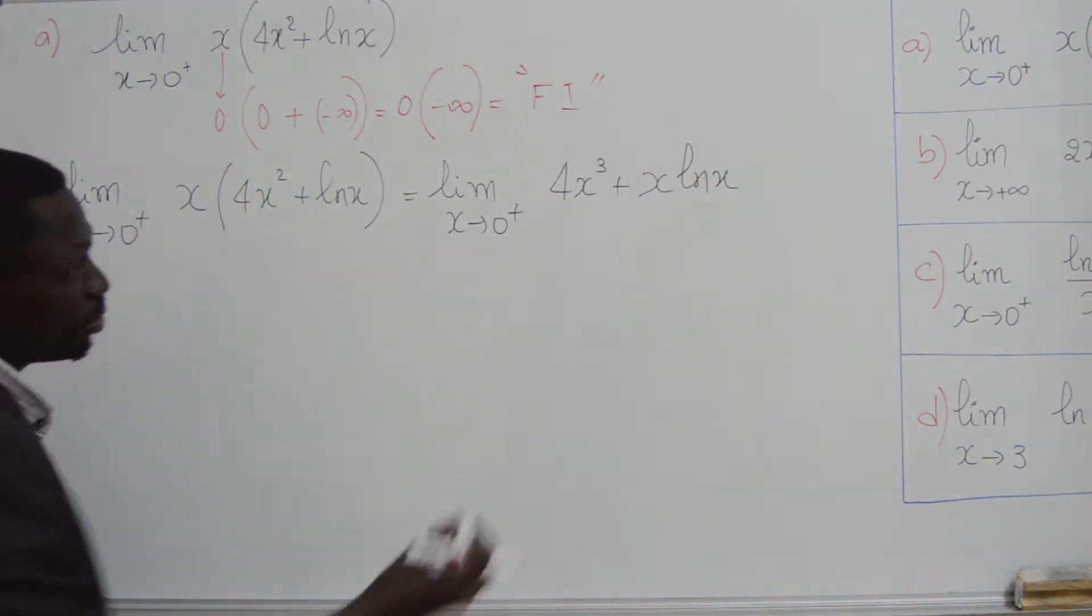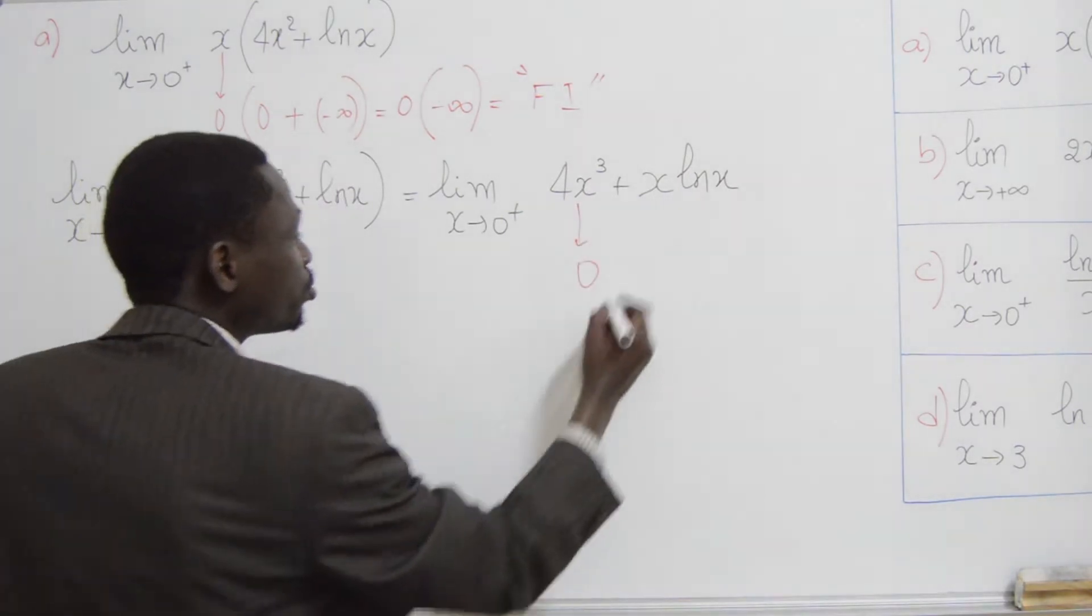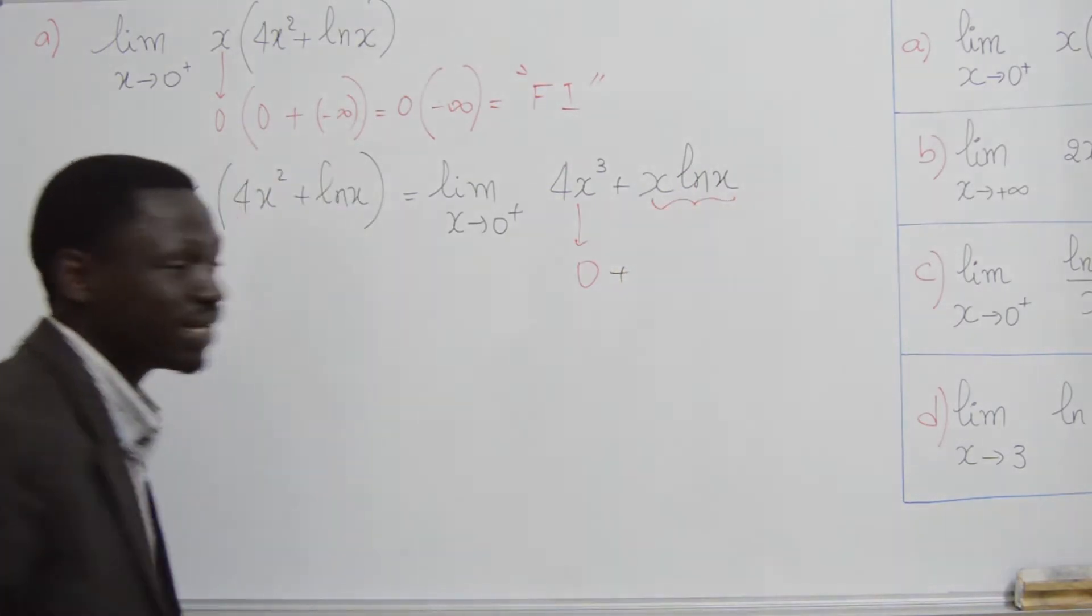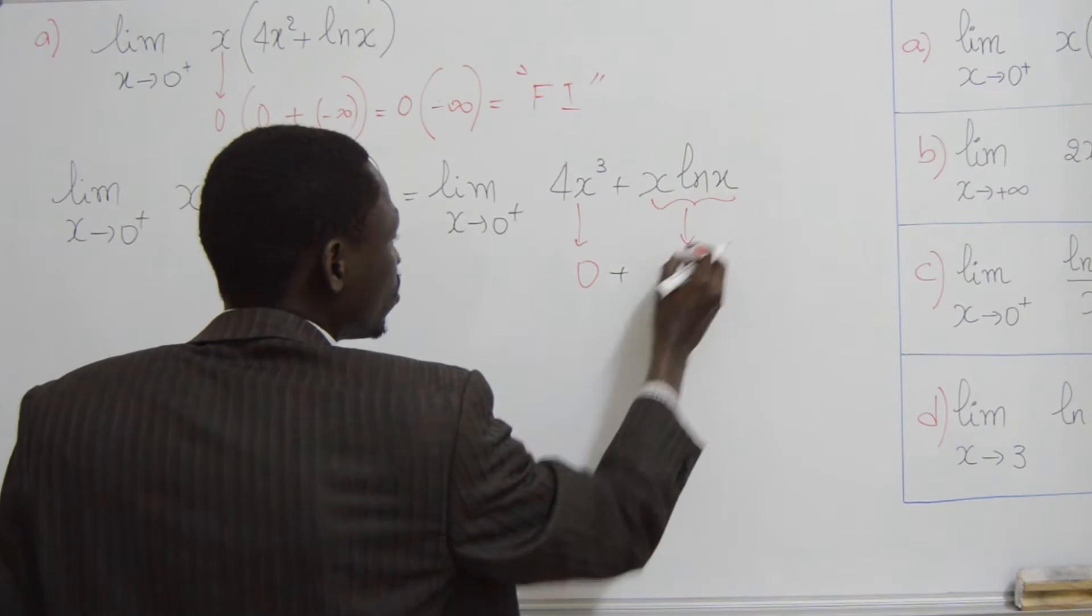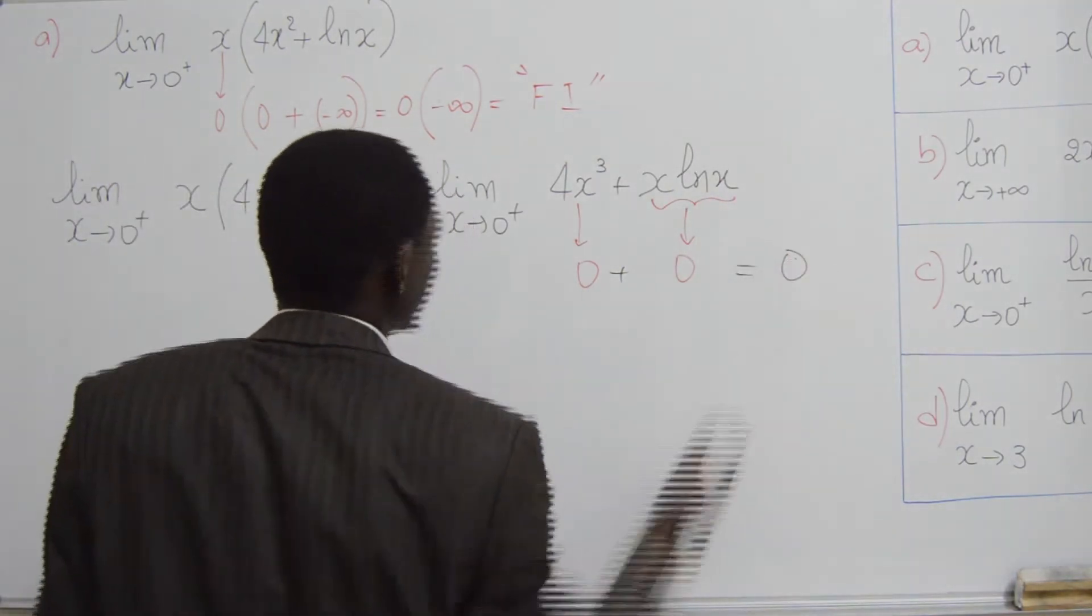On fait les calculs. Alors, 4x³ en 0, c'est tend vers 0. Plus, alors, ça, c'est une limite classique. x ln2x en 0, ça donne 0. Finalement, le résultat, 0 plus 0, c'est 0.